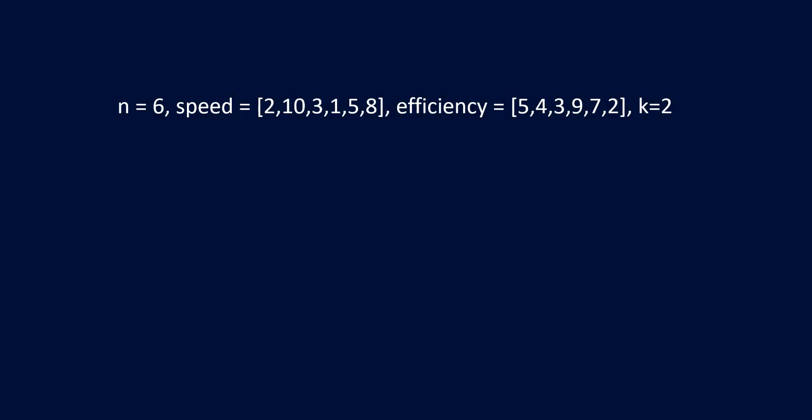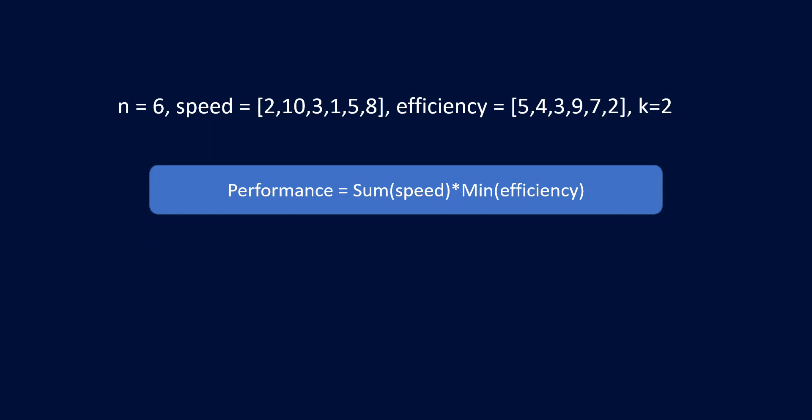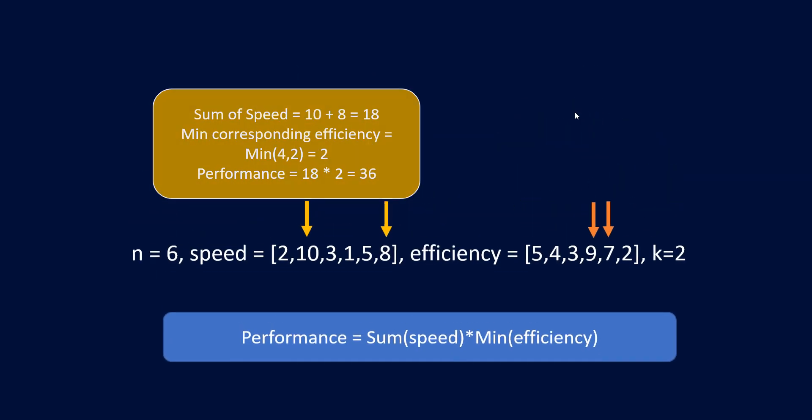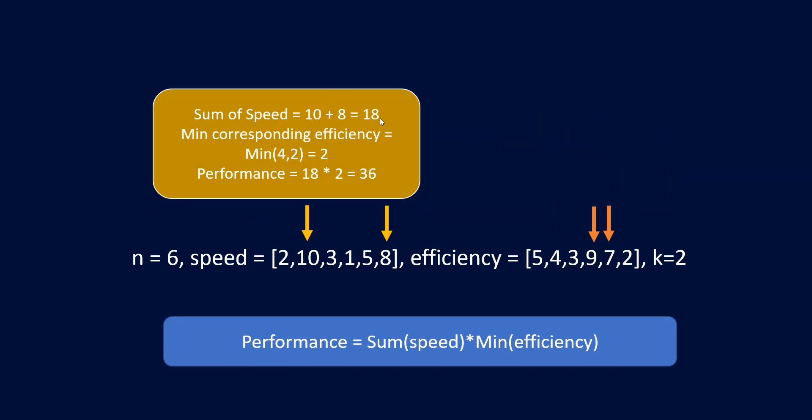Let's consider the first example with k equal to 2 and think about approaches. One approach is to take engineers with maximum speed; another is to take engineers with maximum efficiency. With maximum speed we pick two engineers whose speed sum is 18, and with maximum efficiency we pick engineers with efficiencies 9 and 7. Let's calculate the performance in both cases. For maximum speed, performance is 18 multiplied by 2, which is 36.